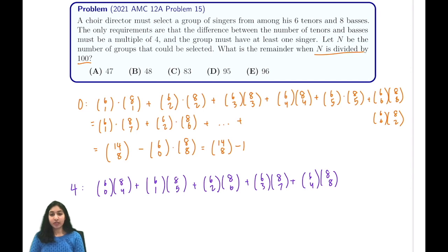Or we could go the other way around, where we have 0 bases and 4 tenors, or we have 5 tenors and 1 base, or we have 6 tenors and 2 bases.